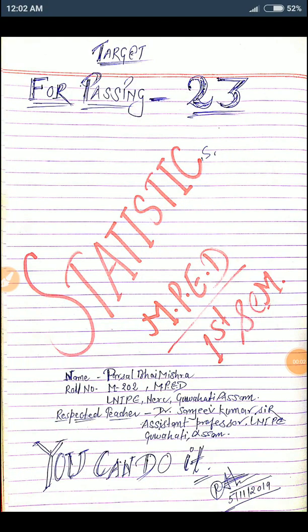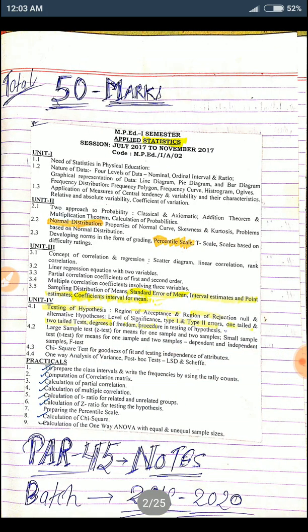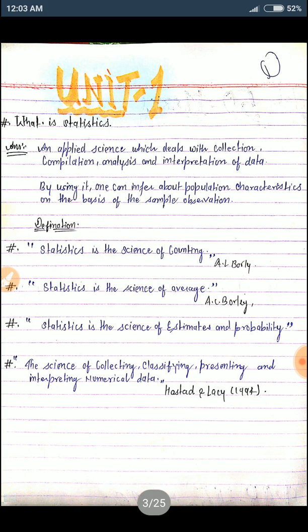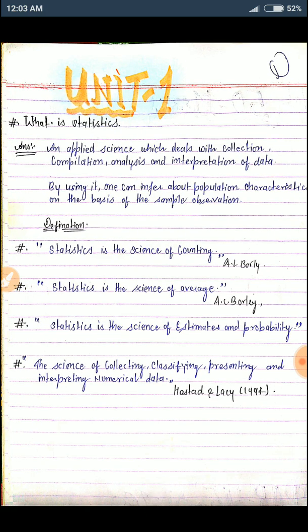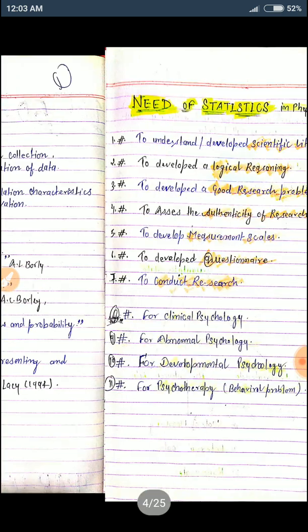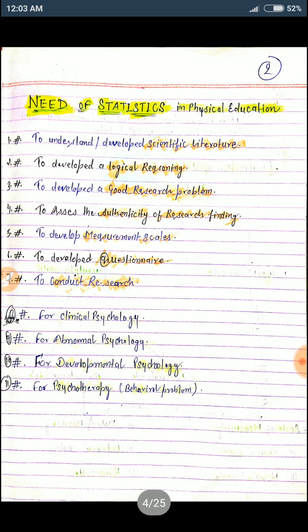Statistics is paired for the same target for passing, 23 marks. There is 50 marks total. This is the syllabus. Unit 1, Unit 2, Unit 3, and Unit 4. Let's start with Unit Number 1. Here, what is statistics? You can see some definitions from my notes. Next is need of statistics in physical education.